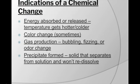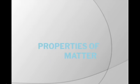Here are some indications of a chemical change — type out what is on the slide. Energy is absorbed or released, meaning it gets hotter or colder. A color change can sometimes occur, though color change alone can be physical. Gas production — if there's bubbling, fizzing, or a smell or odor change. A precipitate is formed, meaning a solid comes out of a liquid and does not re-dissolve.